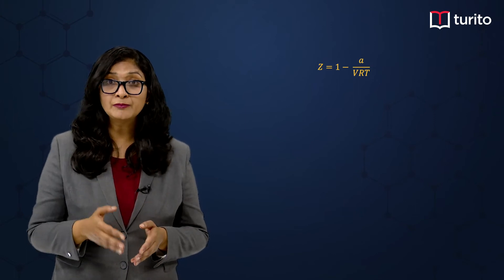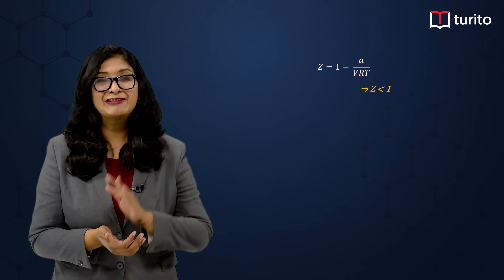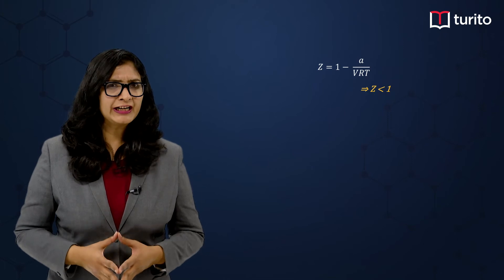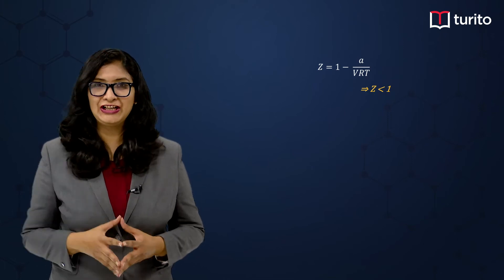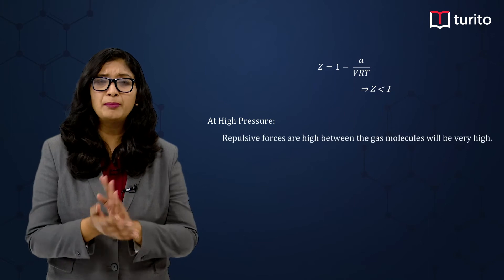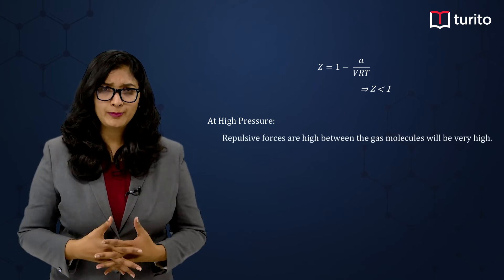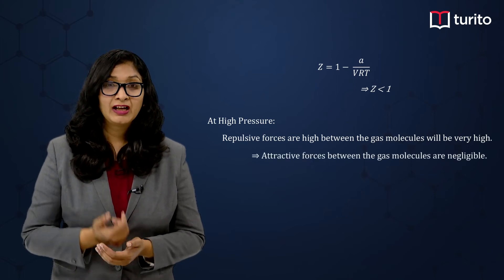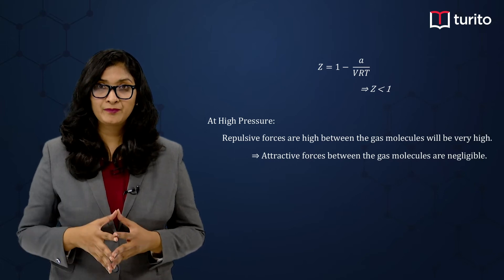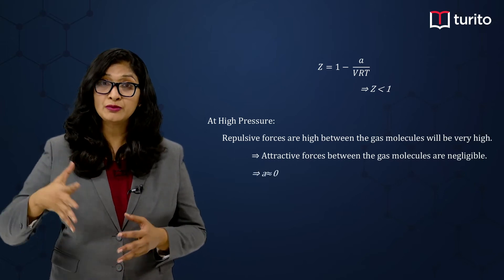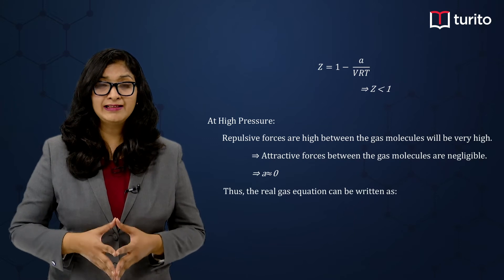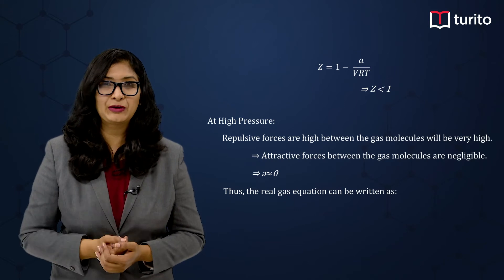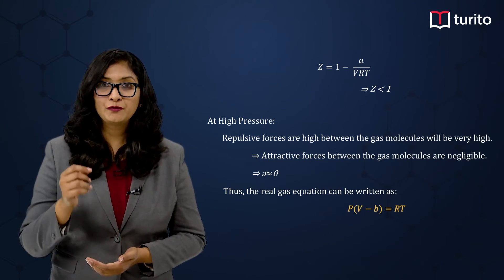Since we are subtracting something from 1, the Z value will be less than 1. Now let us see the condition where Z is greater than 1. At high pressure, the repulsive forces between gas molecules dominate. We can therefore ignore the attractive forces — that means we ignore the term 'a' (it tends to 0). Taking n = 1, the real gas equation becomes: P(V − b) = RT.